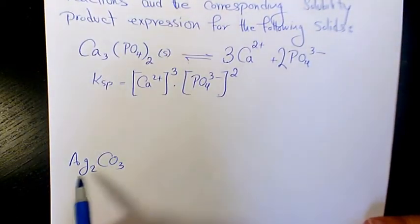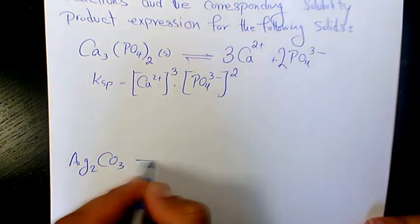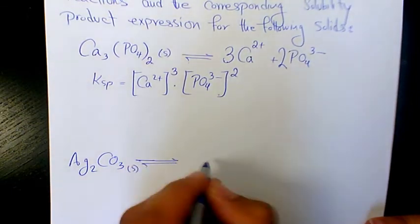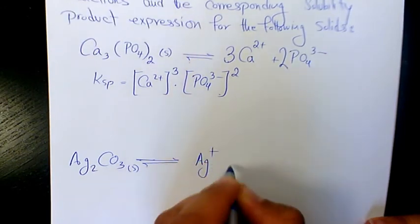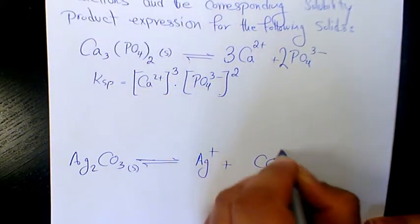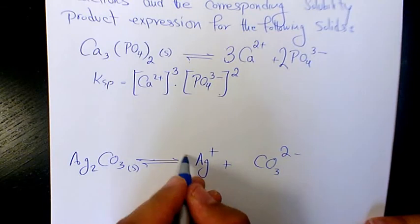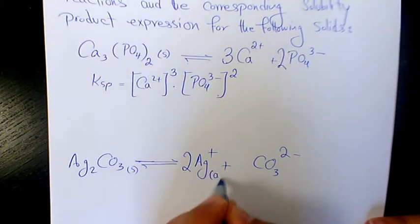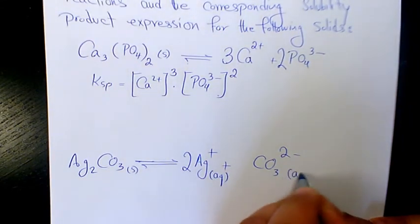Next one is Ag2CO3 which is silver carbonate in solid form. When it dissolves it's going to produce silver plus and carbonate. Then when you balance it, it is going to be two Ag in aqueous phase and carbonate in aqueous phase.